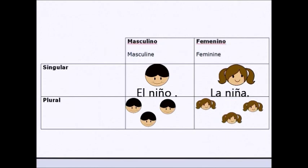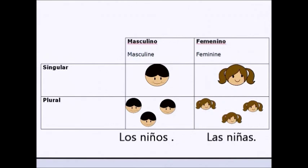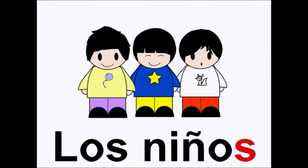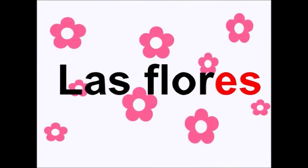The word for 'the' before plural nouns is los if the noun is masculine, or las if the noun is feminine. If a noun ends in a vowel, you make it plural by adding S. If a noun ends with a consonant, you make it plural by adding ES.